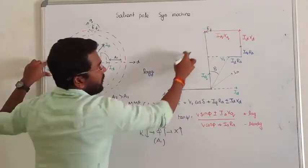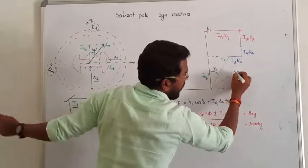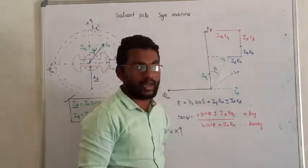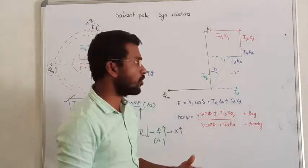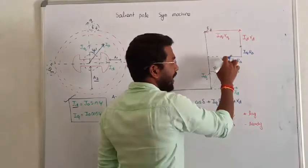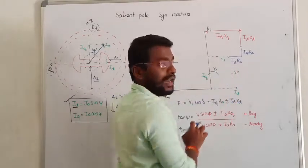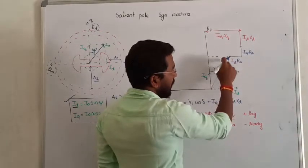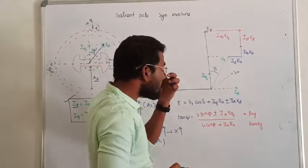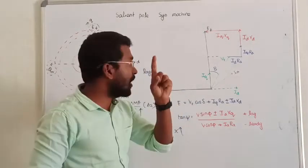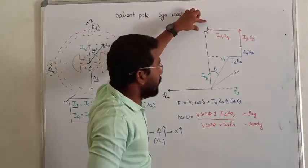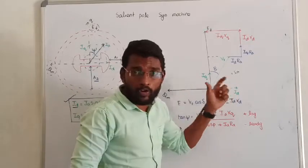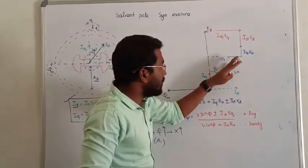Let me come to the phasor. If we know the phasor, you can project very quickly. First, draw the field flux — that is the field voltage. Then draw the armature current. This is the armature current; it is not on my inner cone. If we take the terminal voltage under lagging power factor, the current is somewhere lagging.